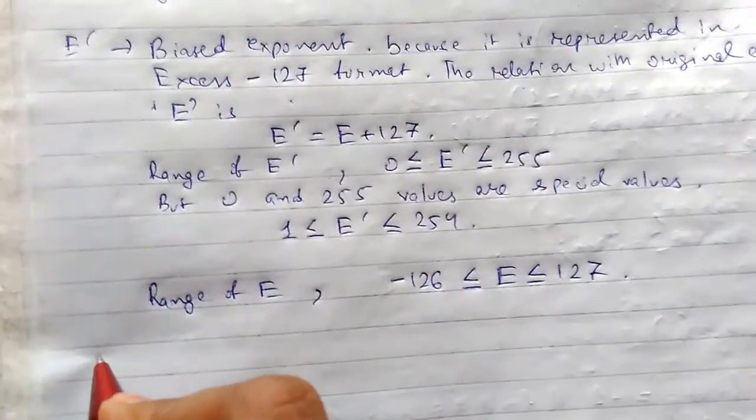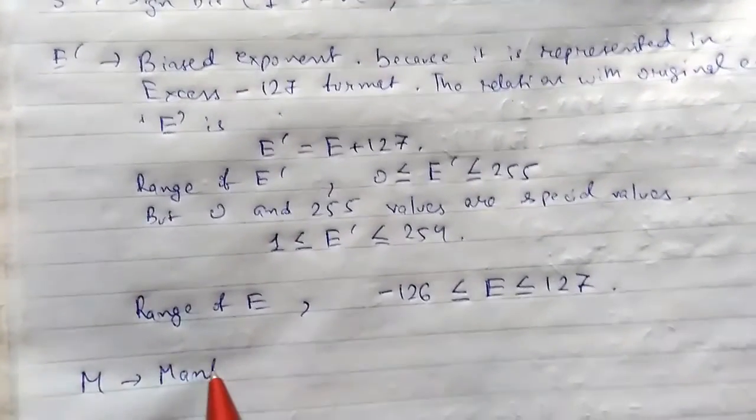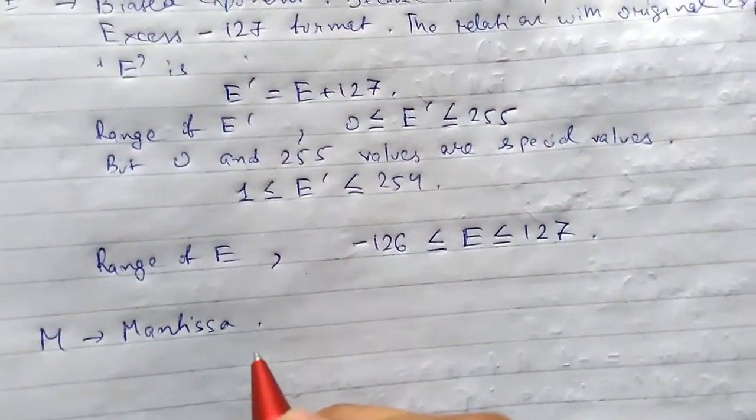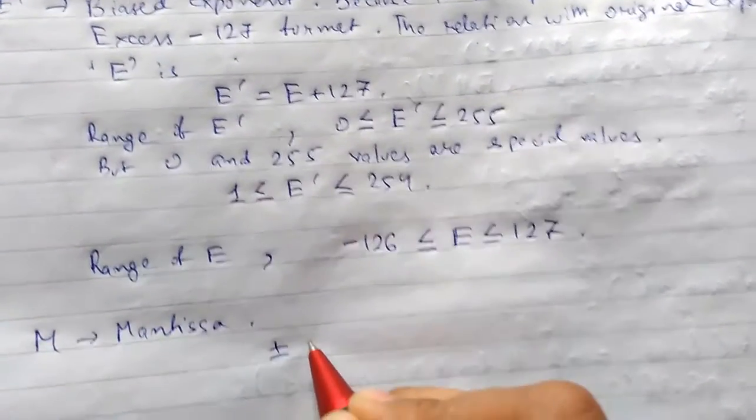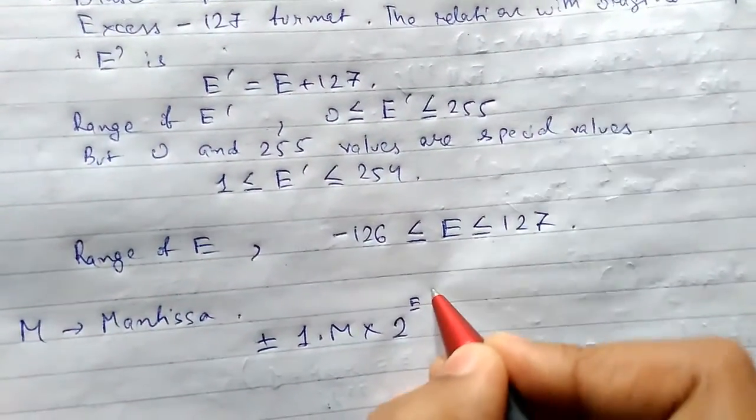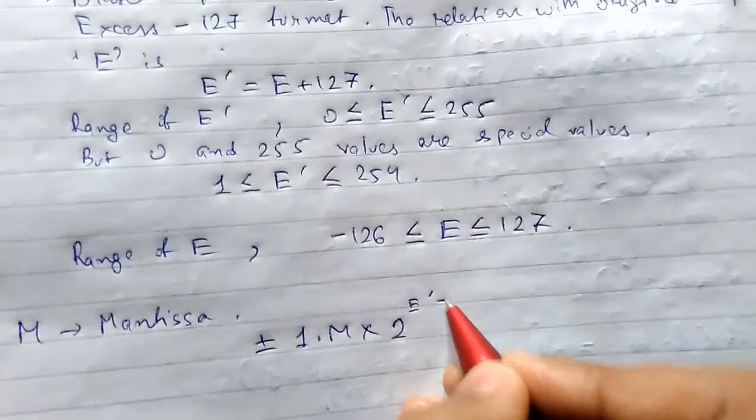And here M is the mantissa. The values of mantissa will be represented like plus minus 1 dot M times 2 to the power E, something like this.